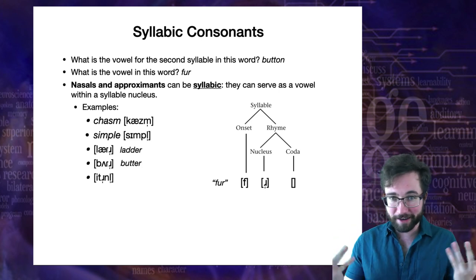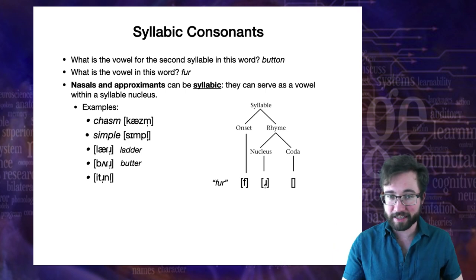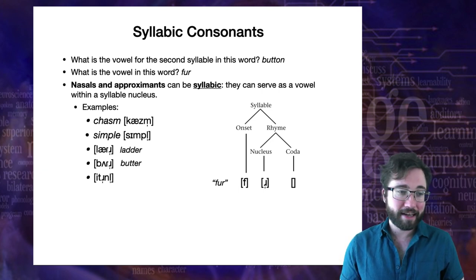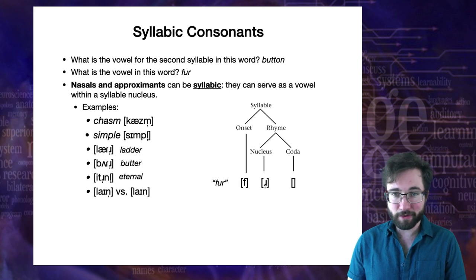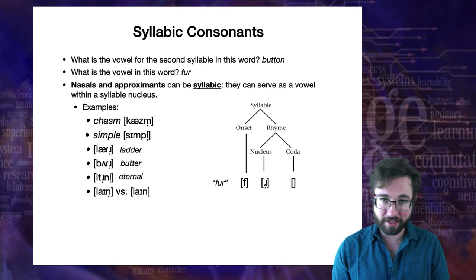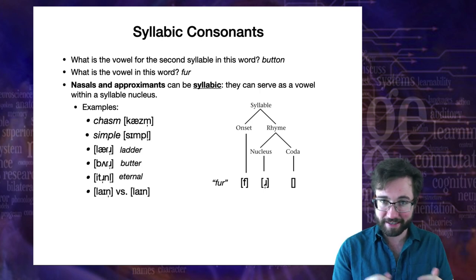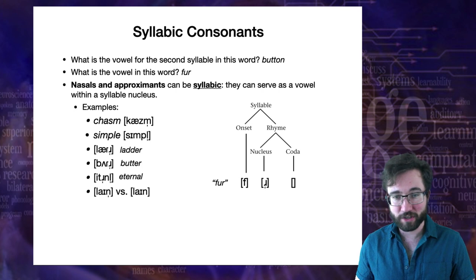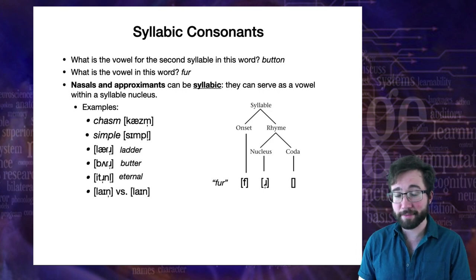Here's an interesting example: 'eternal'. The first syllable is E — plain, no onset, no coda, just the nucleus, the high front unrounded vowel. Then TER, then NUL. Another example: this is why marking syllabic consonants matters. The first transcription has a syllabic consonant N, forming an entire syllable of just N. That's 'lion' — first syllable LI, second syllable N. Versus 'line', where N is not syllabic. The only difference is that in 'lion' the N is syllabic.